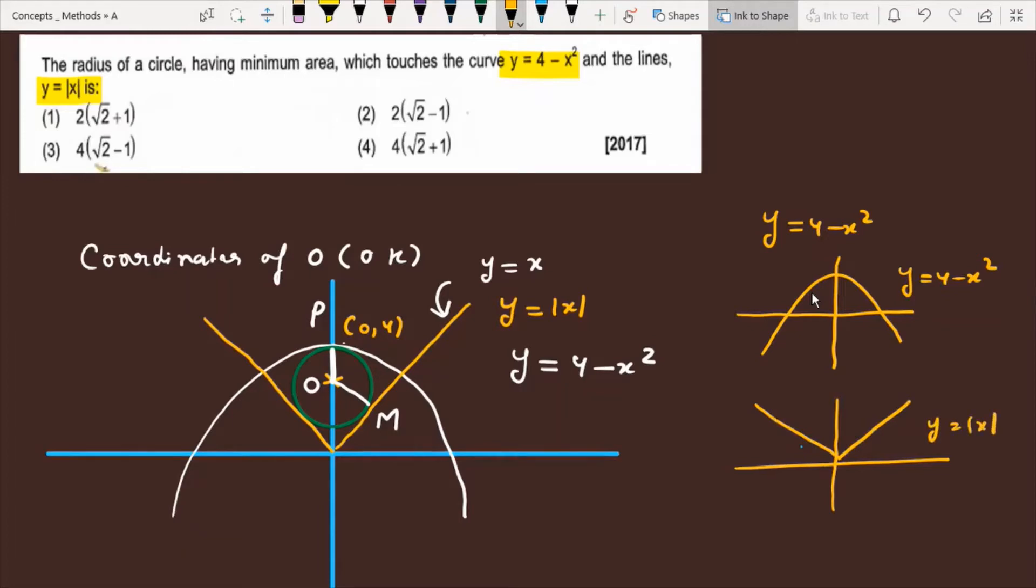Now the question is saying that there is a circle which touches the parabola and y equals mod x, and you have to tell what is actually the minimum area. When this circle has to touch the parabola and the line, what is the radius of this circle?